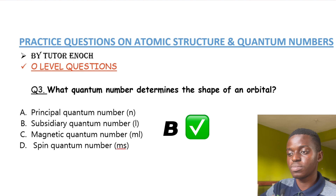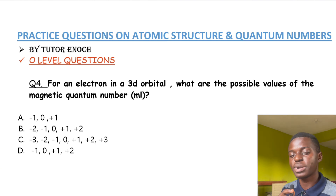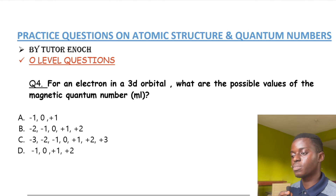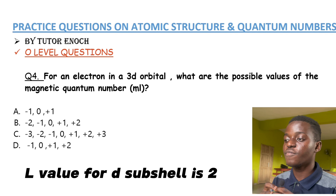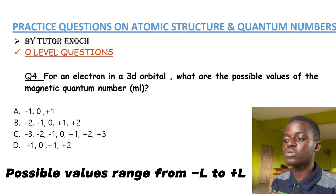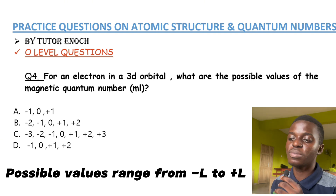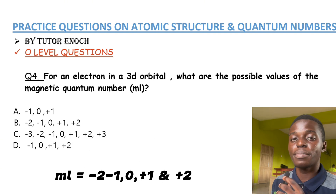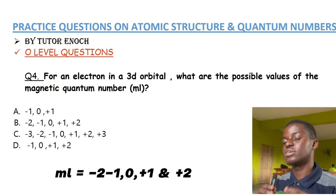The answer to question three is option B — the subsidiary quantum number. Question four asks: for an electron in a 3d orbital, what are the possible values of the magnetic quantum number m-sub-l? The 3d orbital belongs to the d subshell, so the azimuthal quantum number l = 2. The possible values range from −l to +l, which is −2 to +2: that's −2, −1, 0, +1, and +2. The answer is option B.